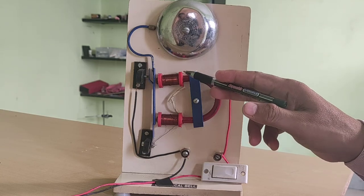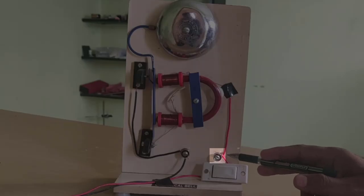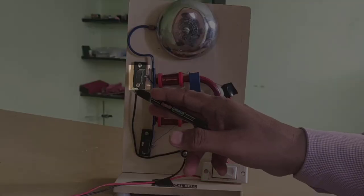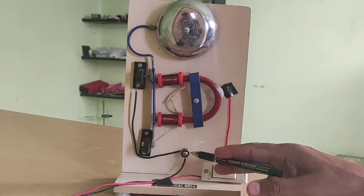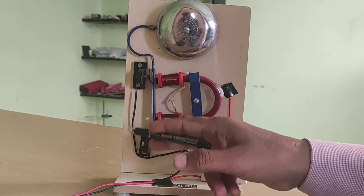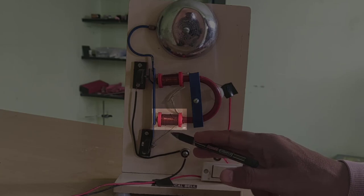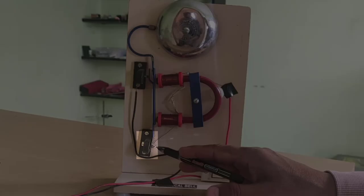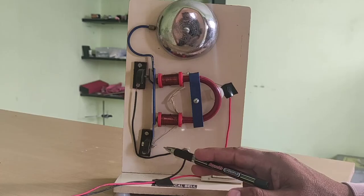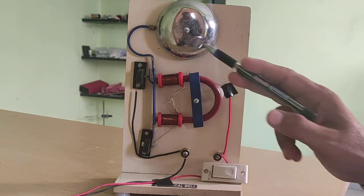Let us see the circuit of this doorbell. This upper coil is connected to one terminal of the battery and this contact screw is connected to the another terminal of the battery with the help of a wire. And this lower coil is connected to this screw of this iron strip. Thus we see the circuit of this electric doorbell.